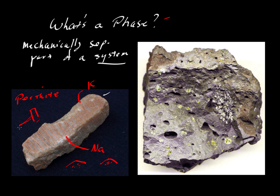That would probably be about all we might find in that sample. Here's another photo, also from the online textbook of Dexter Perkins, showing a basaltic rock. There are a couple of different phases. If your system happens to be material that came out of a volcano, we'd be interested in a few things. There's this green material, which is olivine — scattered throughout the rock. That's one of the phases: the mineral olivine.